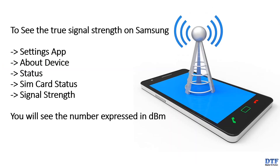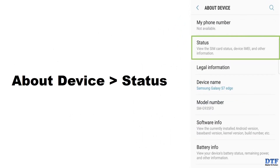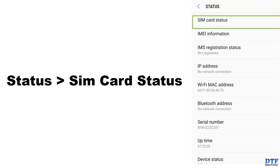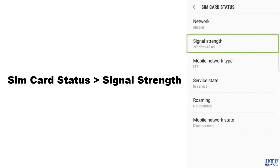To see the true signal strength on Samsung, go to Settings. From Settings, select 'About Device.' From About Device, select 'Status.' From Status, select 'SIM Card Status.' From SIM Card Status, select 'Signal Strength.'